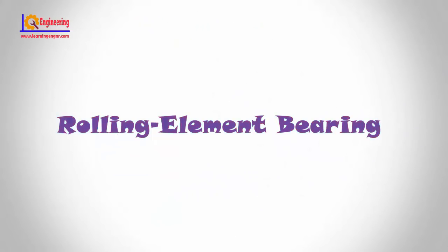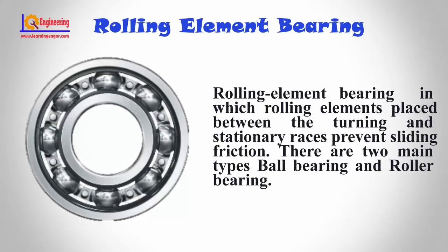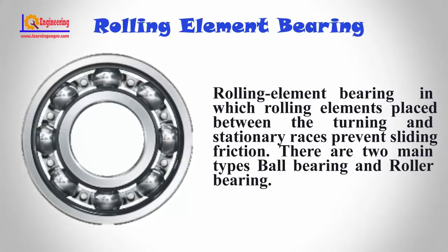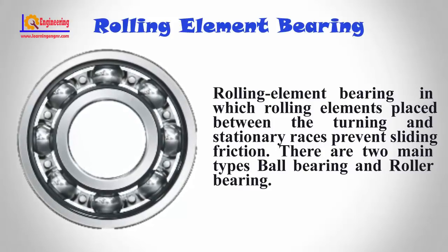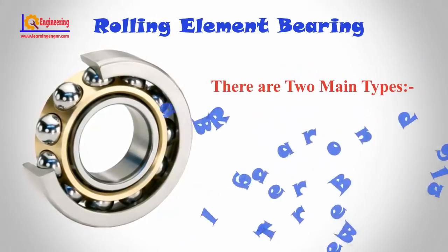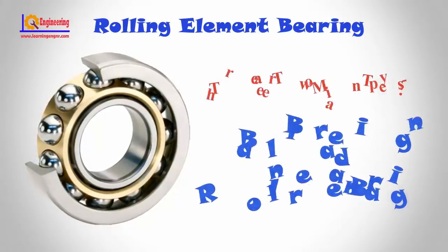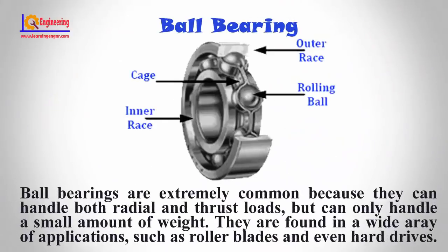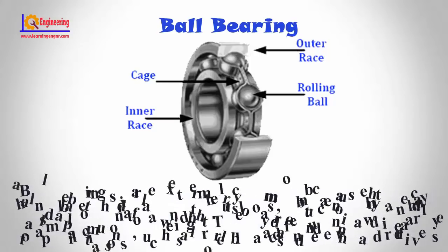Rolling Element Bearings. Rolling element bearings have rolling elements placed between the turning and stationary races to prevent sliding friction. There are two main types: ball bearings and roller bearings. Ball bearings are extremely common because they can handle both radial and thrust loads, but can only handle a small amount of weight. They are found in a wide array of applications such as roller blades and even hard drives.